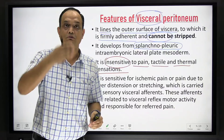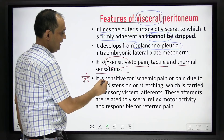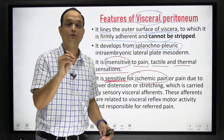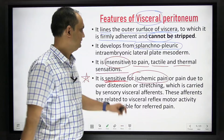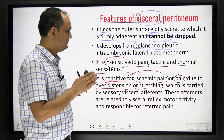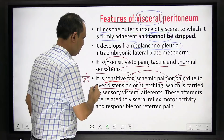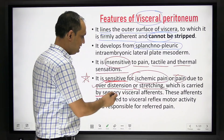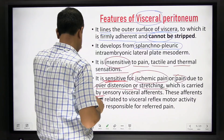However, visceral peritoneum is sensitive to ischemic pain — if the blood supply of an organ is compromised, the person will definitely feel pain. There is also pain due to over-distension or stretching. For example, distension of the cervix is very painful because of stretching. The skin and parietal peritoneum sensations are carried by somatic nerves — spinal nerves.